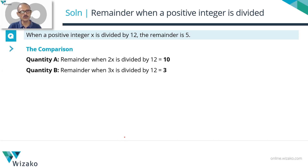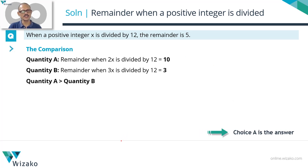Quantity A is 10 and Quantity B is 3. Therefore, Quantity A is greater than Quantity B. Choice A is the answer.